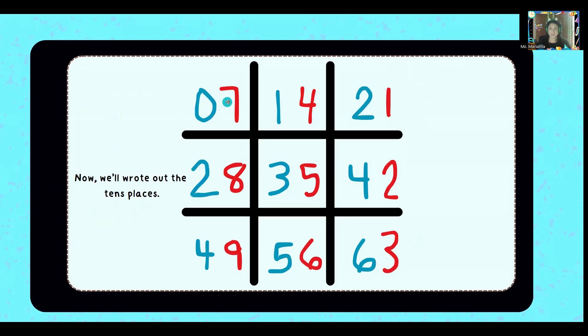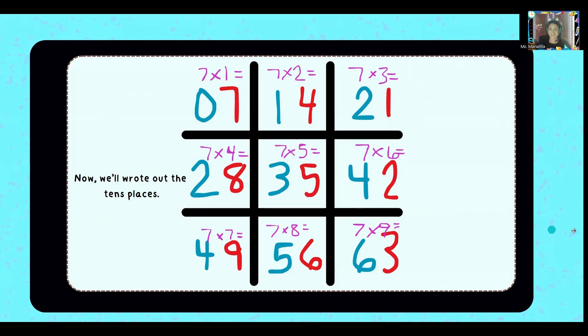Seven times one is seven. Seven times two is 14. Seven times three is 21. Seven times four is 28. Seven times five is 35. Seven times six is 42. Seven times seven is 49. Seven times eight is 56. Seven times nine is 63.